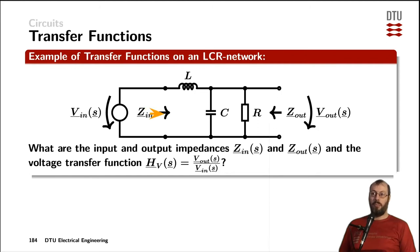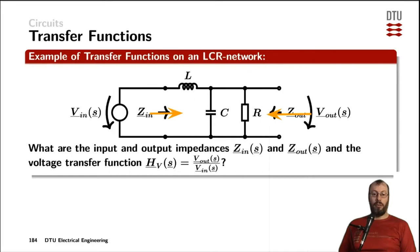The input impedance is defined by looking into the circuit from the left-hand side and leaving the voltage terminals open. The output impedance is found by looking in from the right-hand side, with all voltage sources short-circuited. If we had a current source, we would need to leave it open.